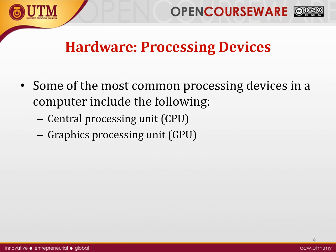When talking about processing devices, there are two main categories responsible for processing data: the CPU — Central Processing Unit — and the GPU — Graphics Processing Unit.